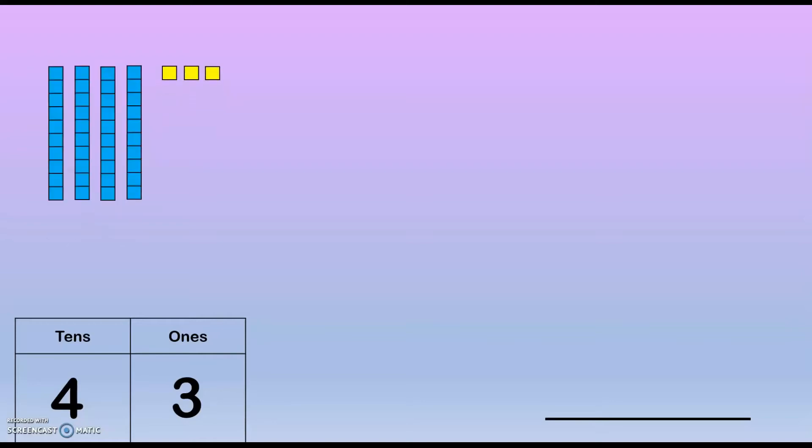Let's look at the number 43. It looks like one of our place value charts. 43 has four tens and three ones. We can even use our place value blocks to show four tens and three ones. When we count by tens we count 10, 20, 30, 40.